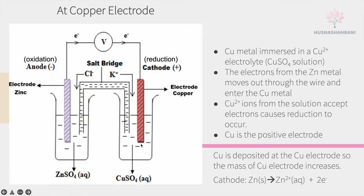At the copper electrode on the right, the copper metal is immersed in a copper sulfate electrolyte solution. The electrons from the zinc metal — we know that the zinc electrode releases two electrons — flow through the wire from the zinc electrode and enter the copper metal.